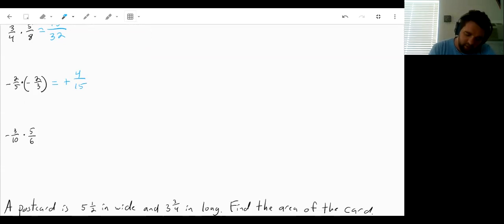Let's try the next one. We have a negative times a positive means our answer will be negative. 3 times 5 will be 15 on top and 10 times 6 will get us a 60 on the bottom.